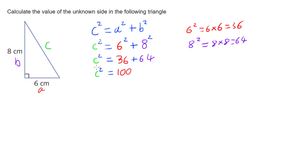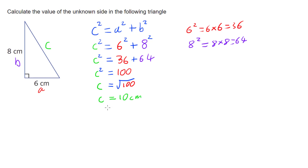Now I have c² = 100, but I don't want c², I just want c on its own. So I need to undo this square by doing the opposite of squaring, which is square rooting. So c on its own is going to be the square root of 100. The square root of 100 is 10, so c equals 10 centimeters. And that's how we use Pythagoras's theorem to find the length of the hypotenuse of a right-angled triangle.